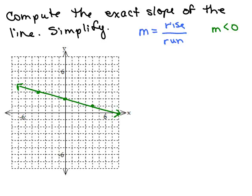What we could do is start from any point on the line and figure out how to get to another point on the line. It doesn't matter where you start and where you end as long as those two points are on the line. Let's start right here and say we want to end over here. How would I get from that point to the other point?